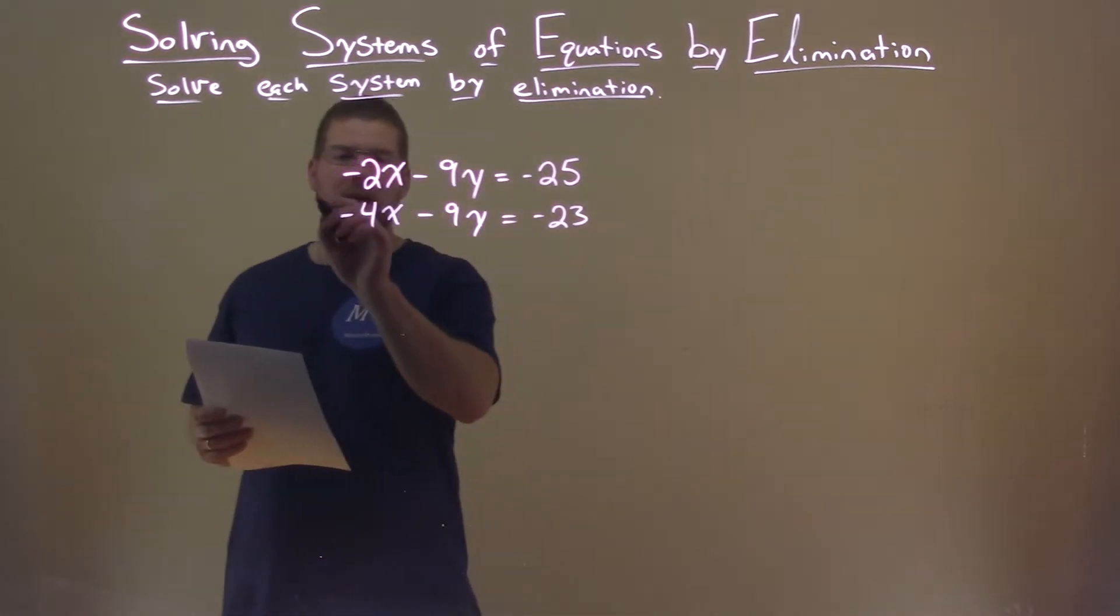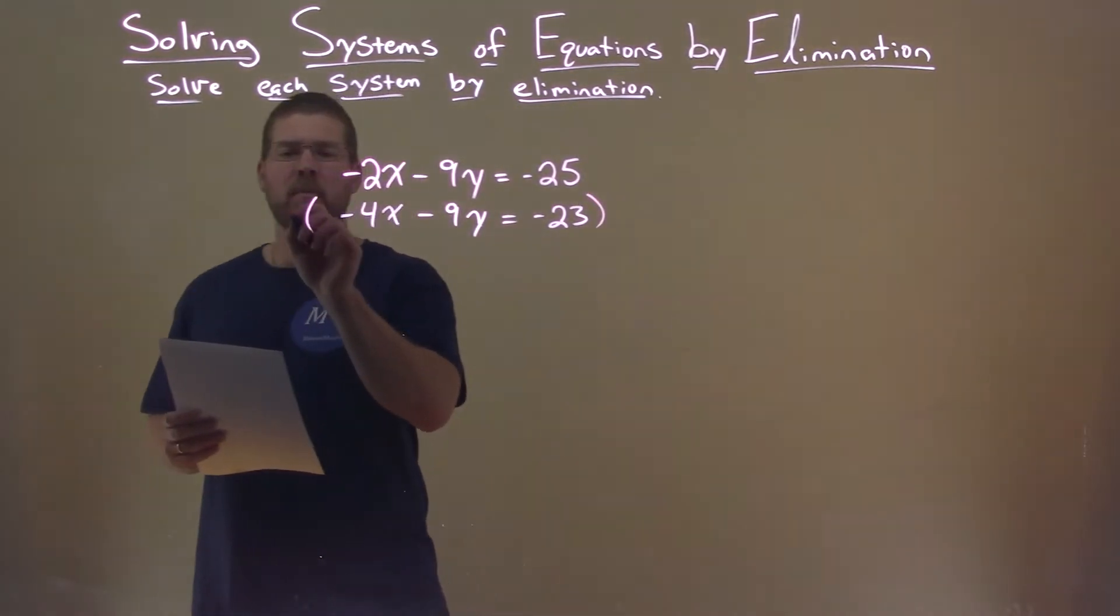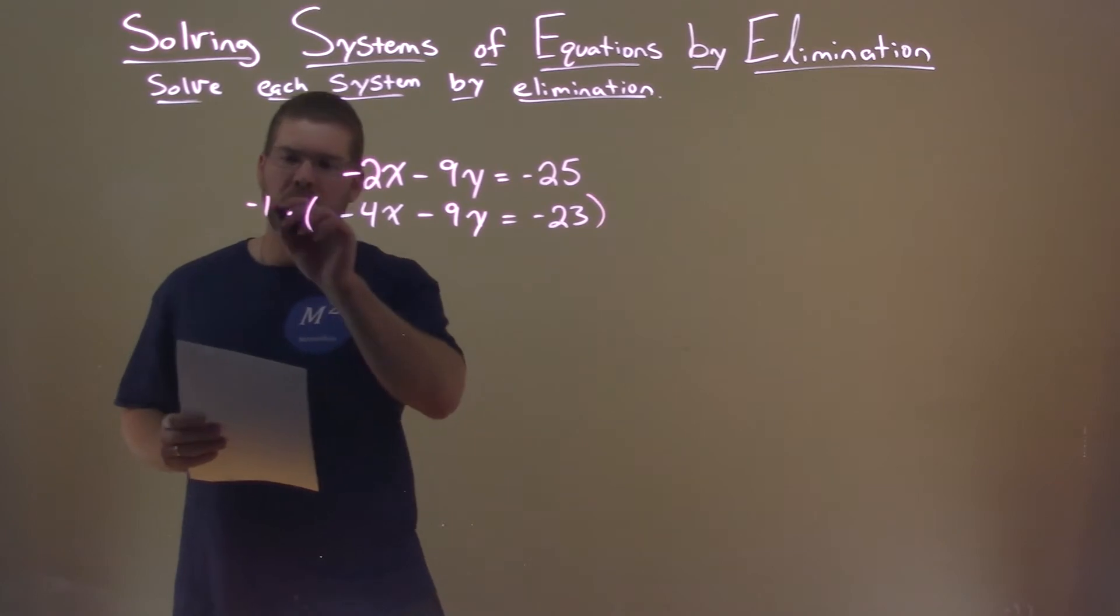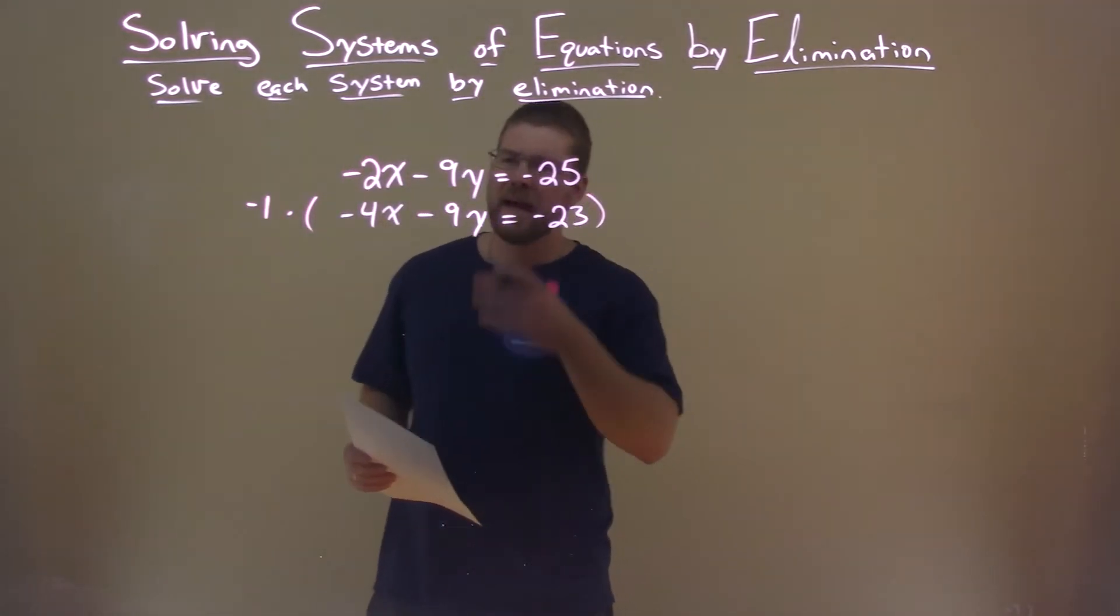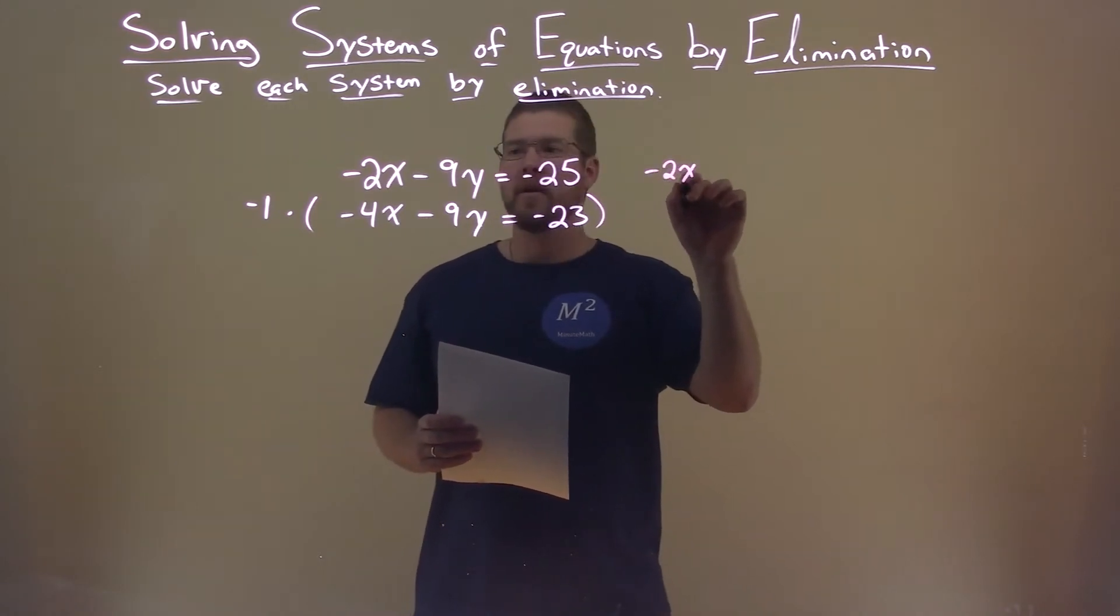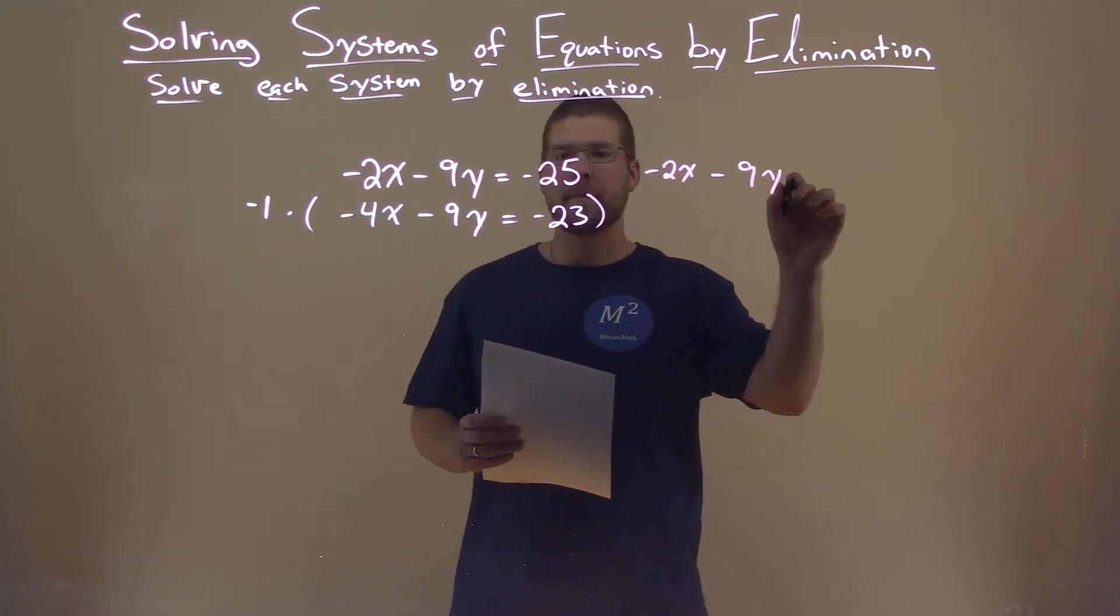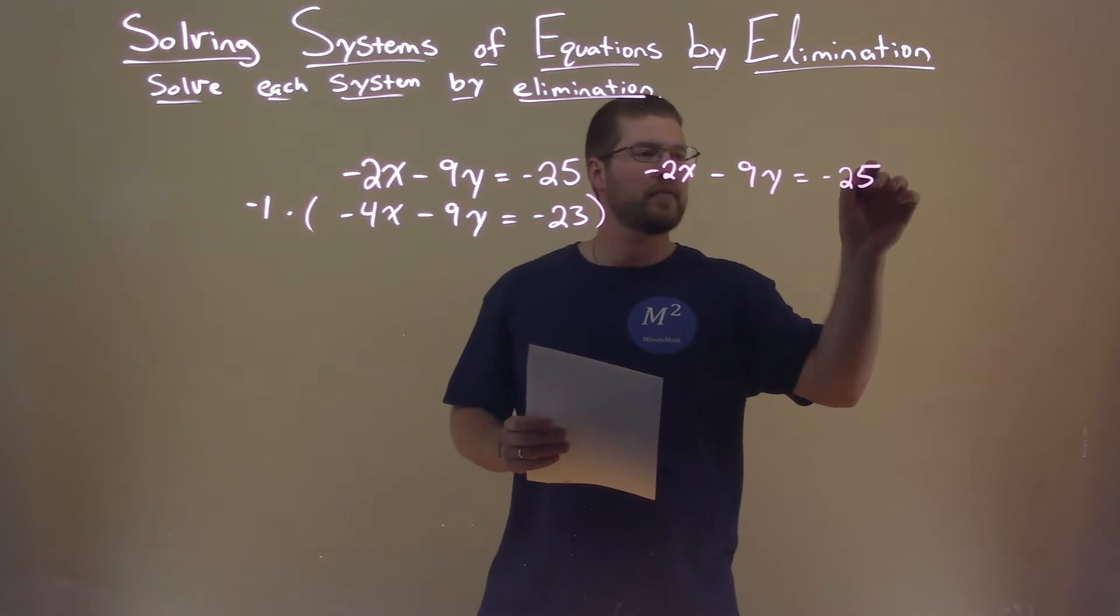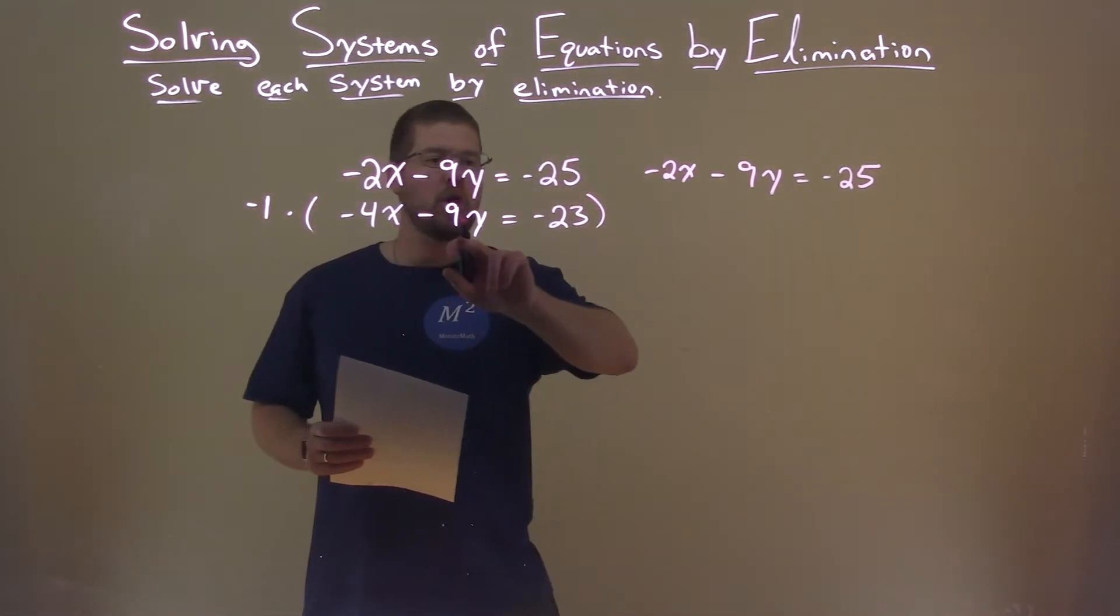So what I'm going to do is actually take the second equation and multiply that by negative 1. Now you can subtract the two equations, that's fine. I like to do it this way. So, rewrite this: negative 2x minus 9y equals negative 25. Multiply negative 1 to all parts here.